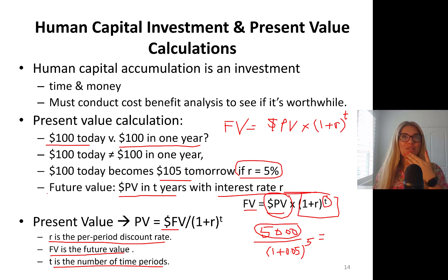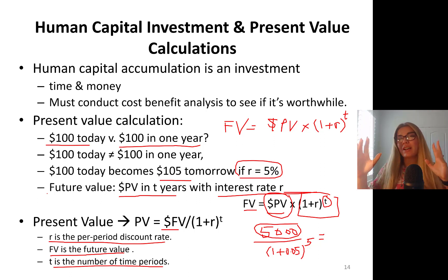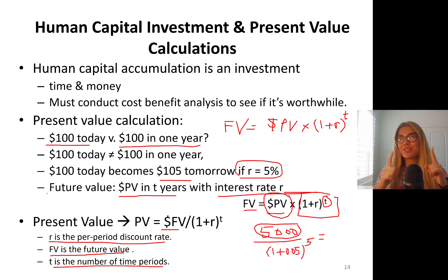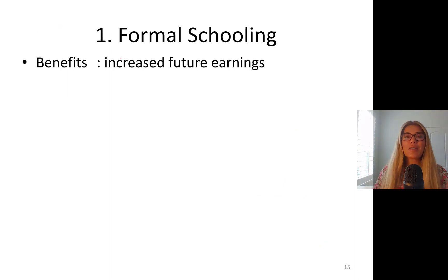The same thing applies to scratch-off lottery tickets in the US that guarantee $1,000 per week forever — but with a 20-year cap. $1,000 per week in 20 years is not the same as $1,000 per week today. Something to think about.